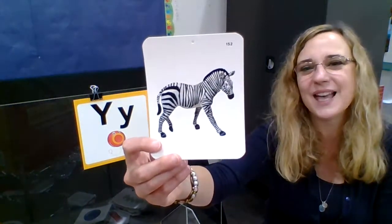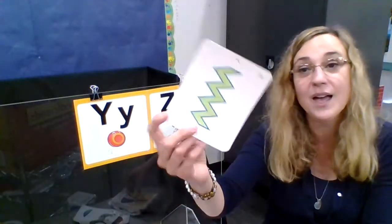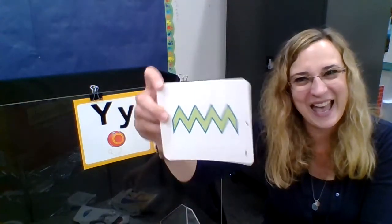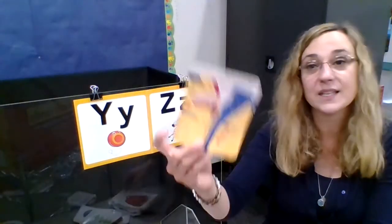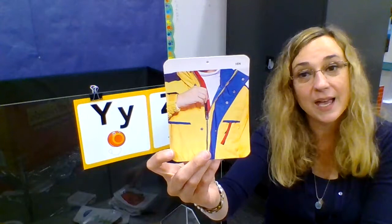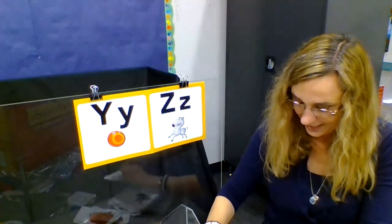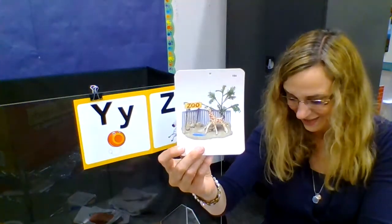Down to our last one. It is letter Z. Z is for Z, Z, zebra. Z, Z, zebra. Z, Z, zigzag. Z, Z, zigzag. Z, Z, zipper. Z, Z, zipper. And Z, Z, zoo. Z, Z, zoo.